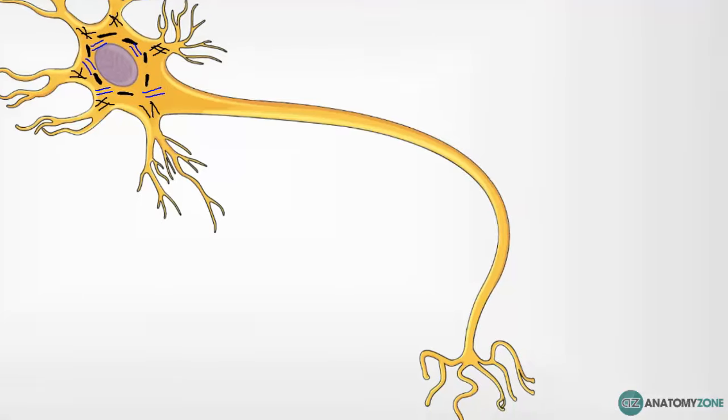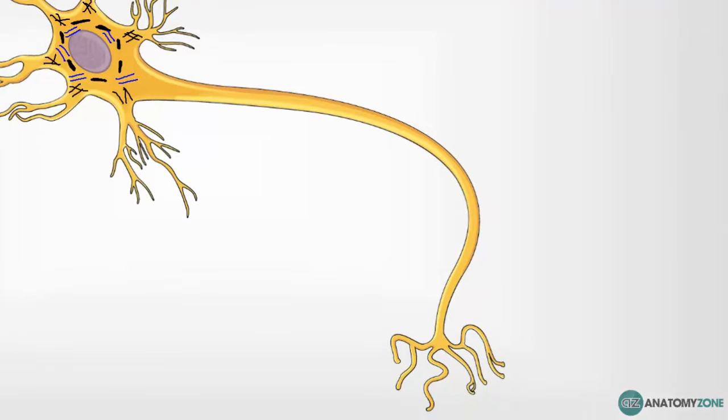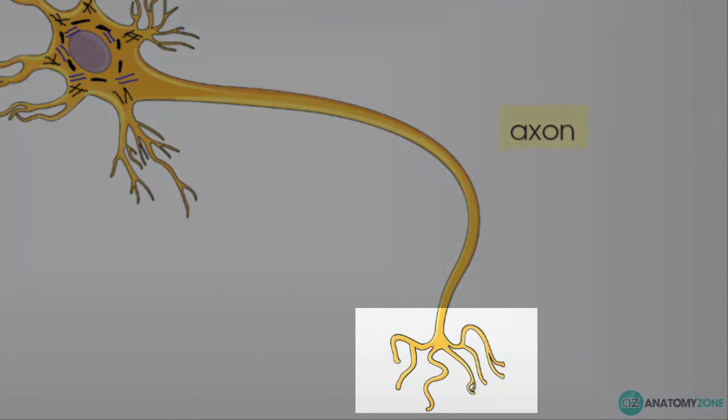Next, coming off from the cell body and extending the length of the neuron is the axon. Each neuron has one axon which projects to the target cells. This axon, as you can see at the end, has several branches. The axon can branch several times to many other cells.